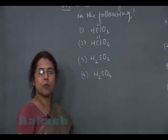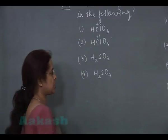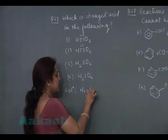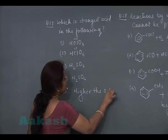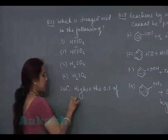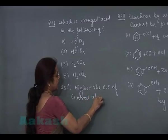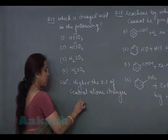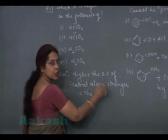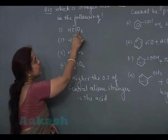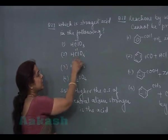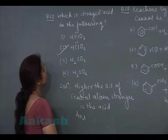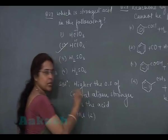According to rule, higher the oxidation state of central atom, stronger is the acid. So if we compare HClO3 and HClO4, HClO4 should be the stronger acid. Hence, answer of this question is option number 2.